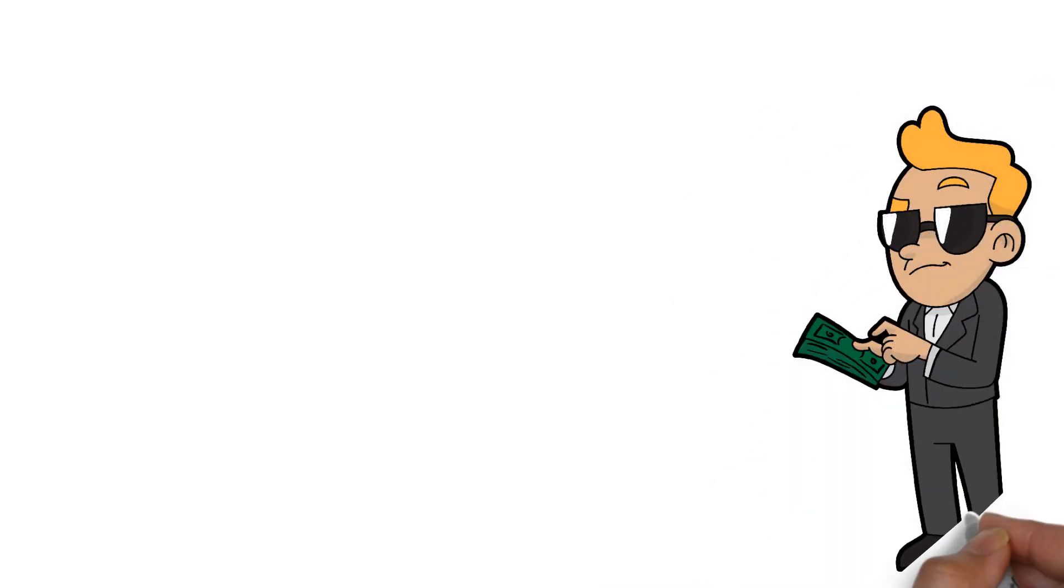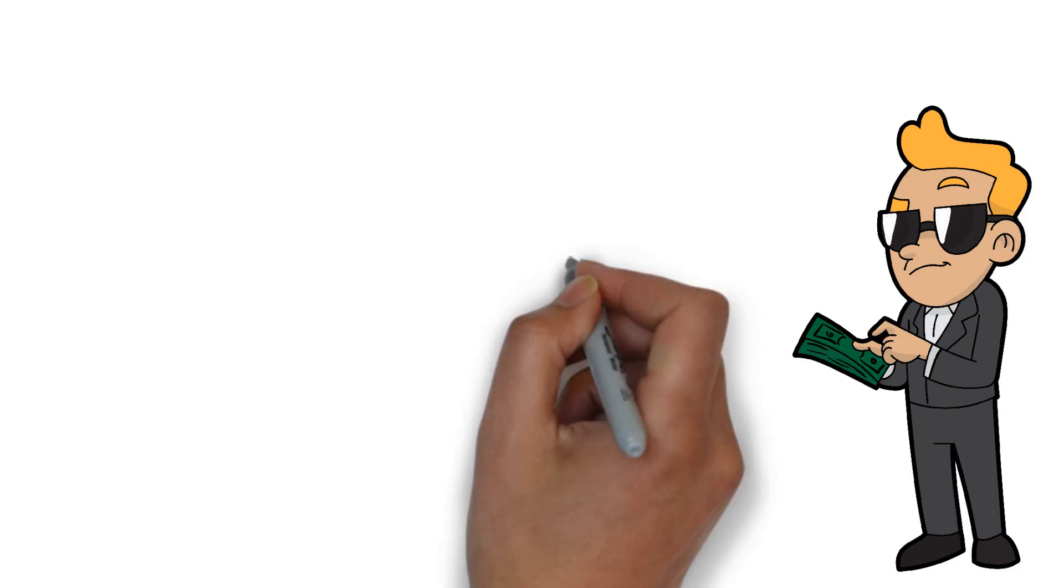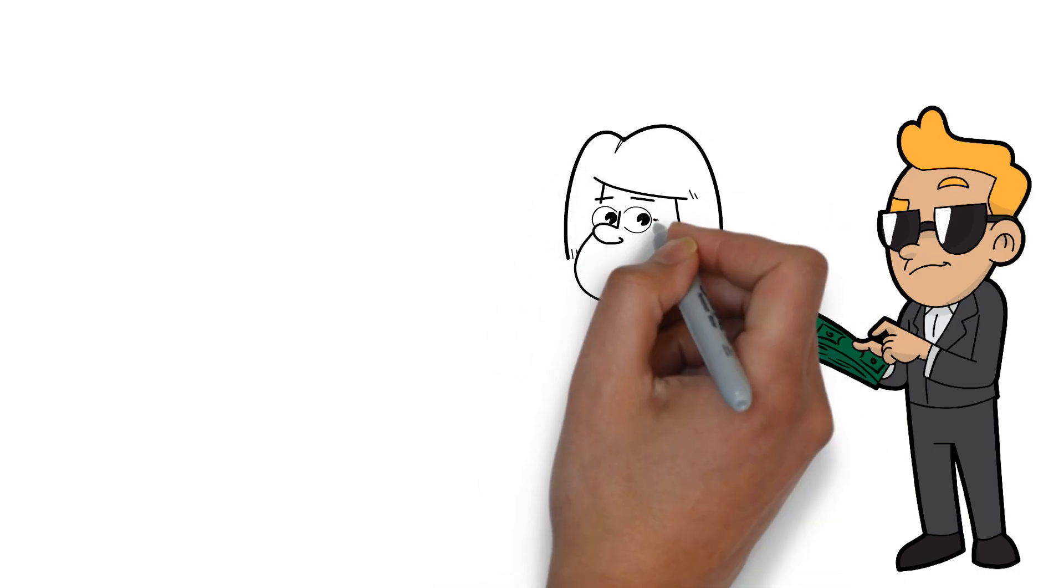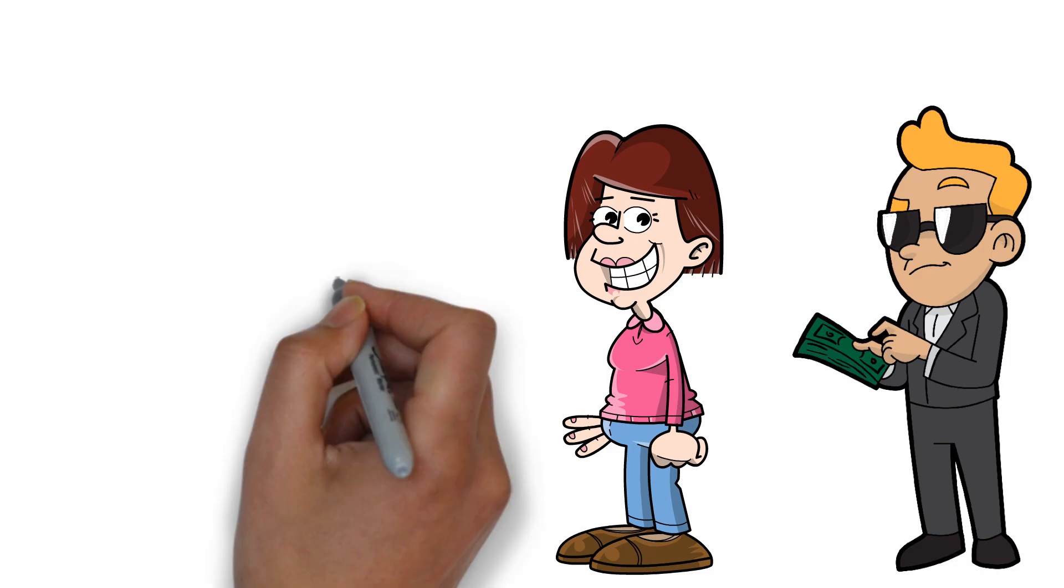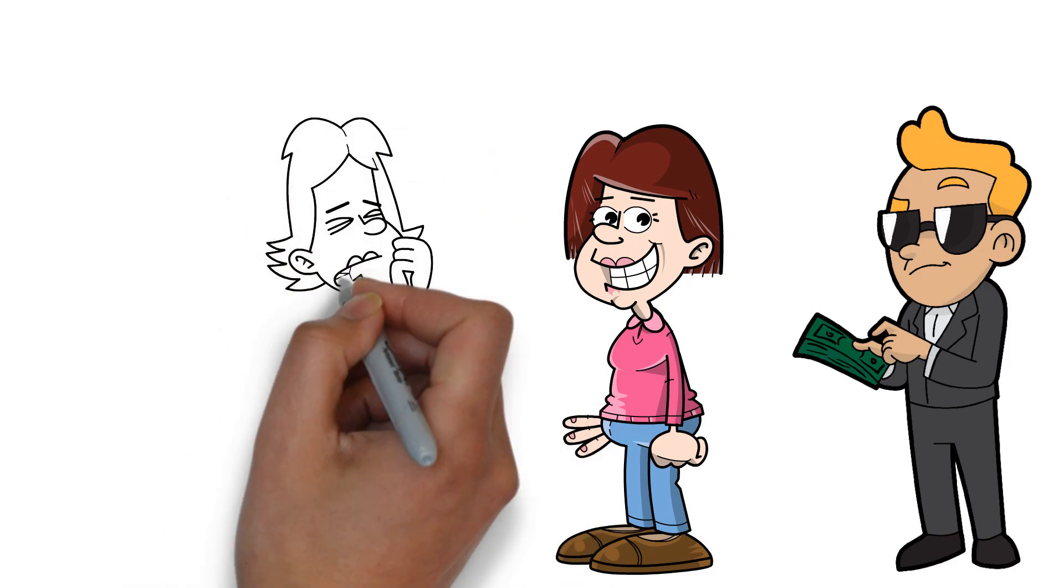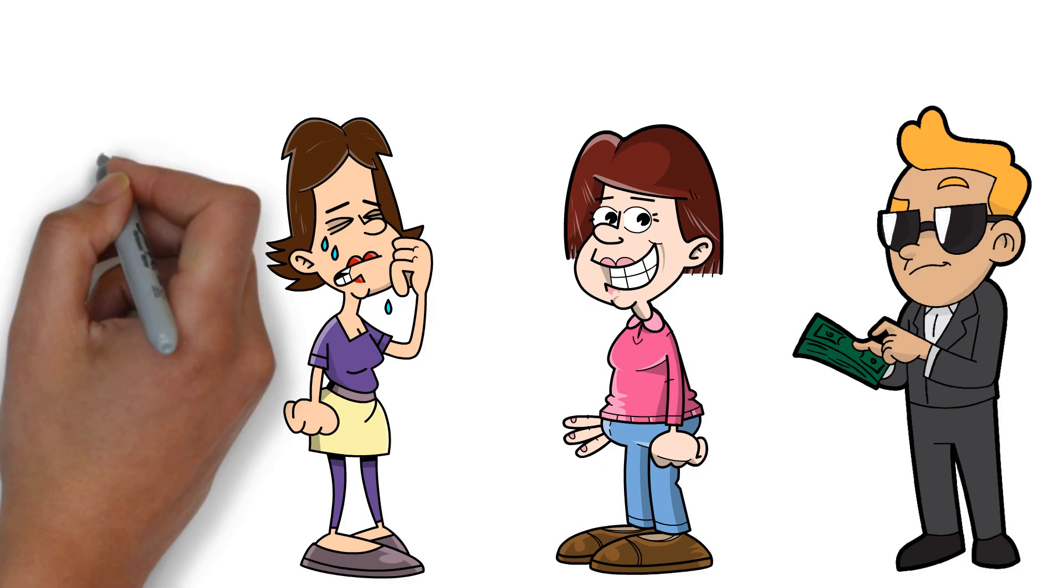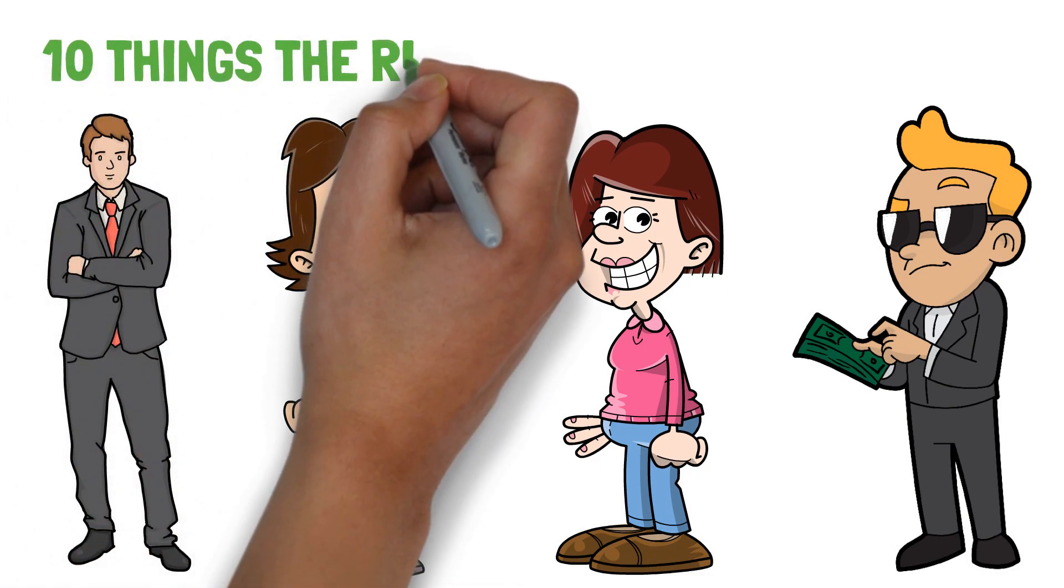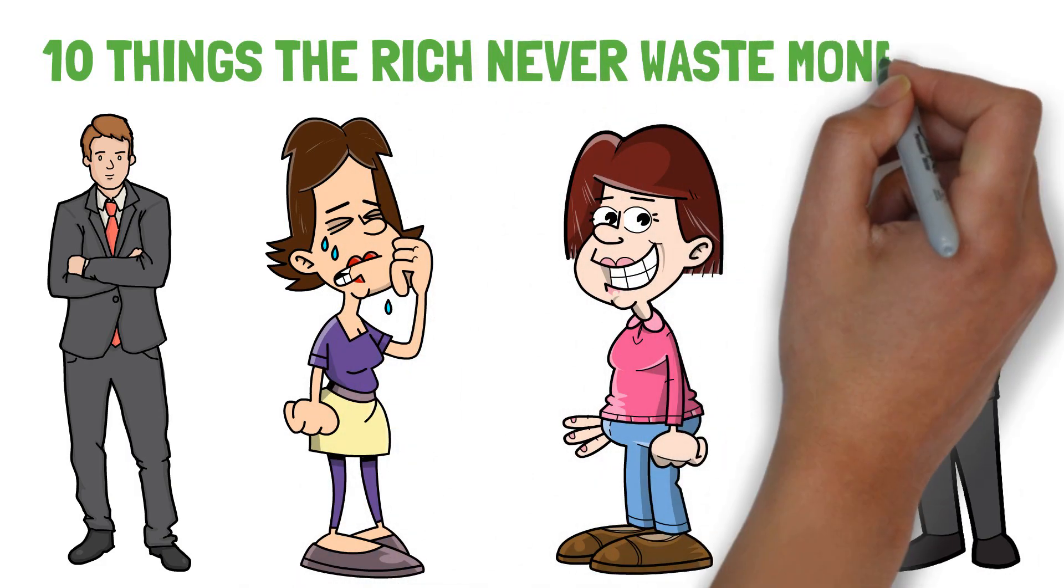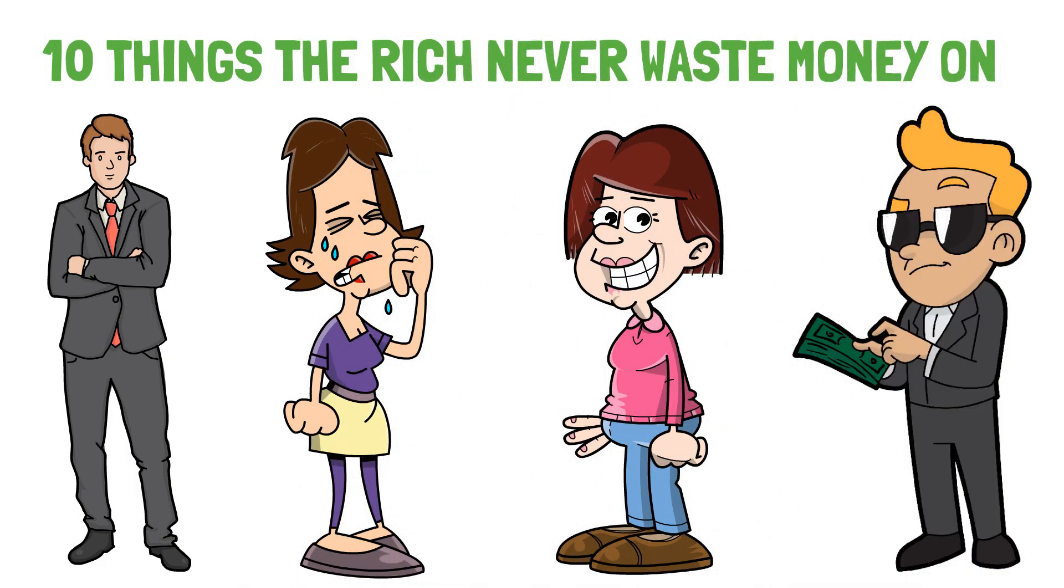There are many things that the rich people don't buy and never even look at, but the poor people on the other hand always get allured by those products and ultimately fall into impulse of buying those. This difference keeps them poor. In this video we will be telling you about the 10 things on which the rich people never waste their money on but the poor always does. Avoid these bad spending to become rich. Now let's start.